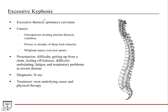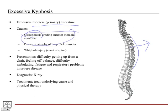Excessive kyphosis is excessive thoracic primary curvature. This gives people that humpback look — those sweet old ladies walking with a walker. This results from osteoporosis eroding the anterior area of the thoracic vertebrae, causing them to weaken and translate posteriorly. You can also have disuse or atrophy of the deep back muscles, which help maintain spinal posture. Weak back muscles lose stability and the spine translates posteriorly. It can also be due to whiplash injury, more in the cervical spine.